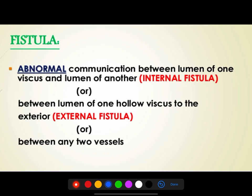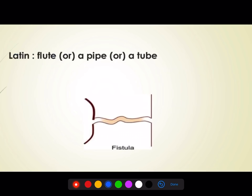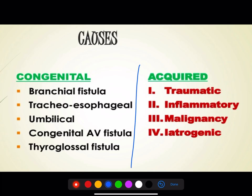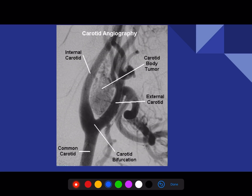A fistula has two communications — between the lumen of one viscus to the lumen of another. Previously we noted sinus has only one opening; fistula has two openings. Types include traumatic, inflammatory, malignant, and iatrogenic (acquired), as well as congenital.